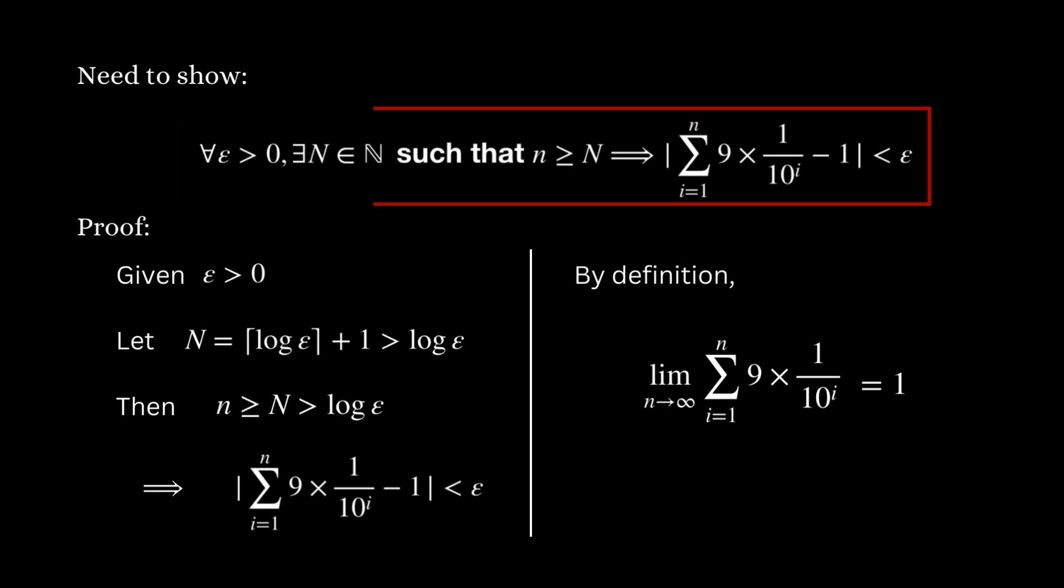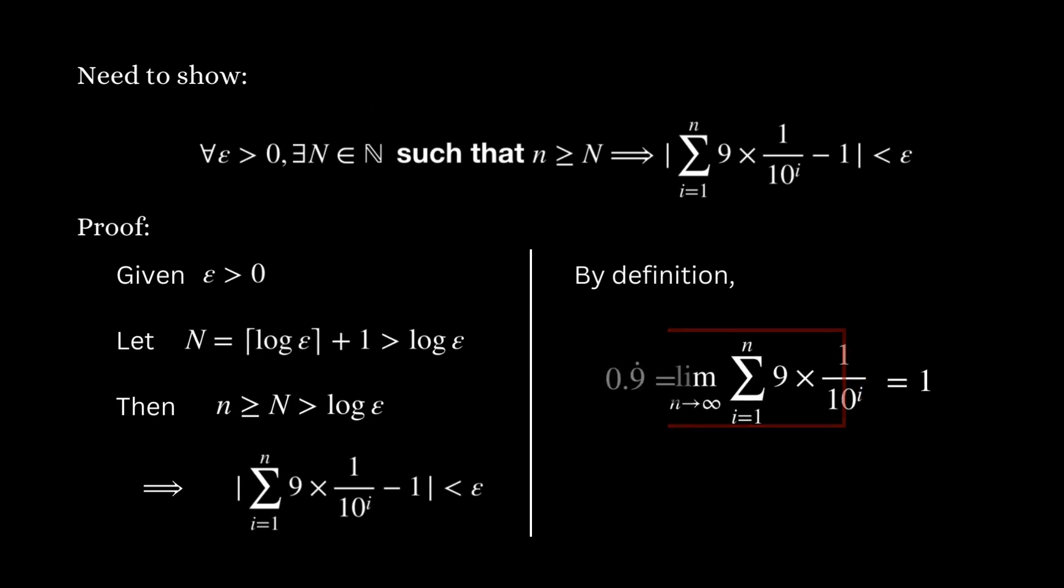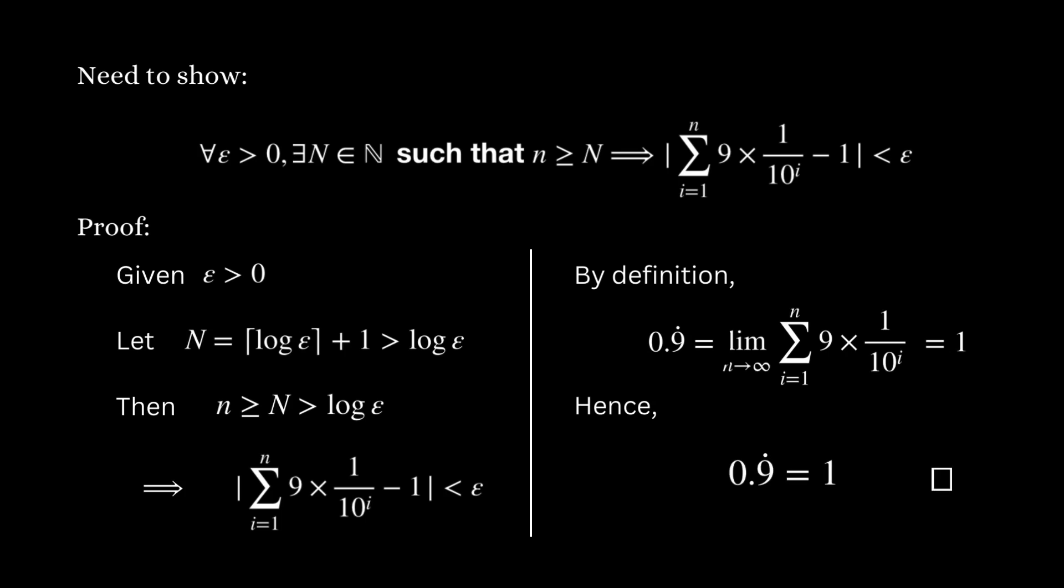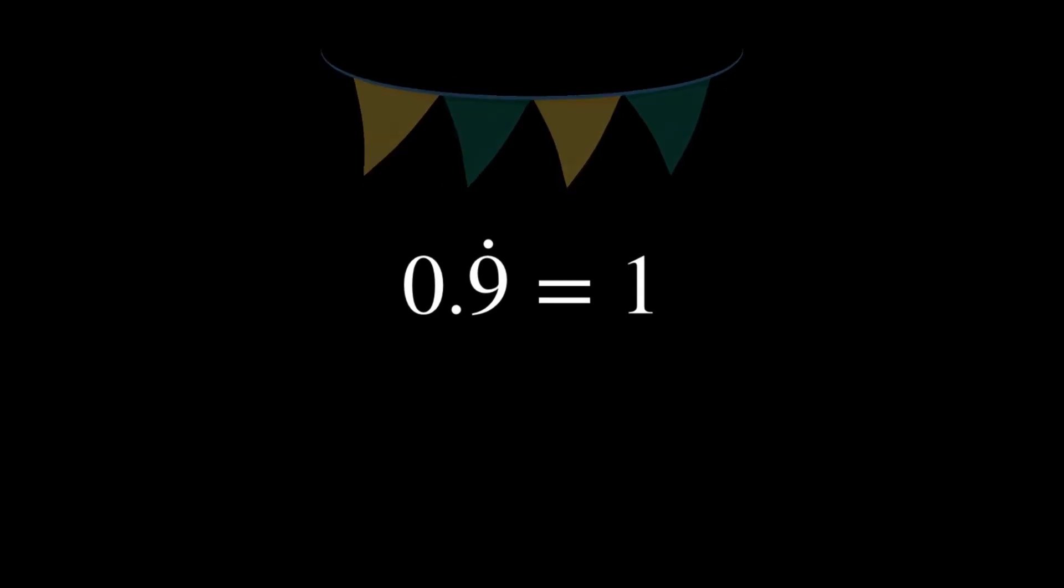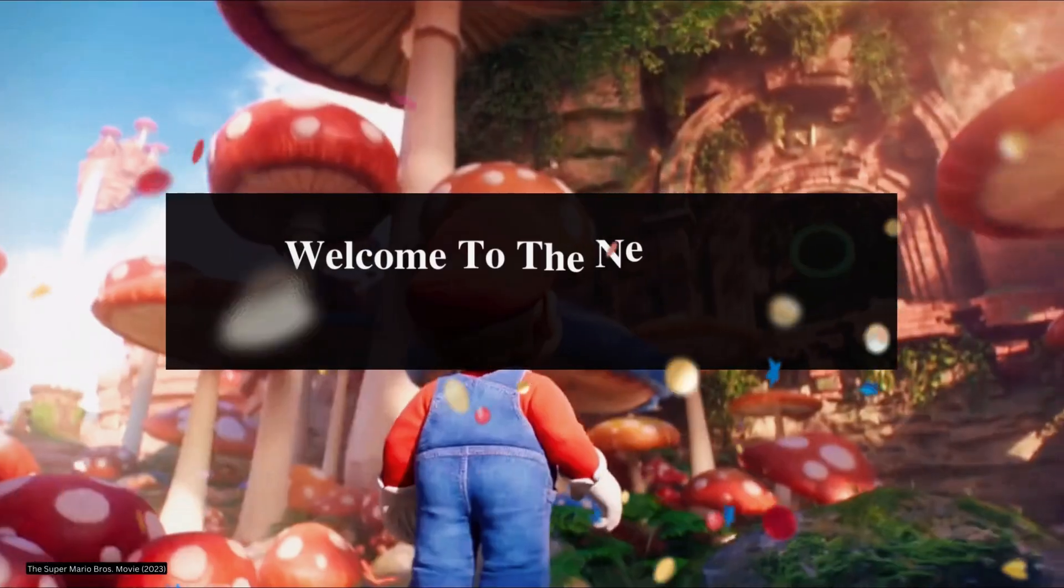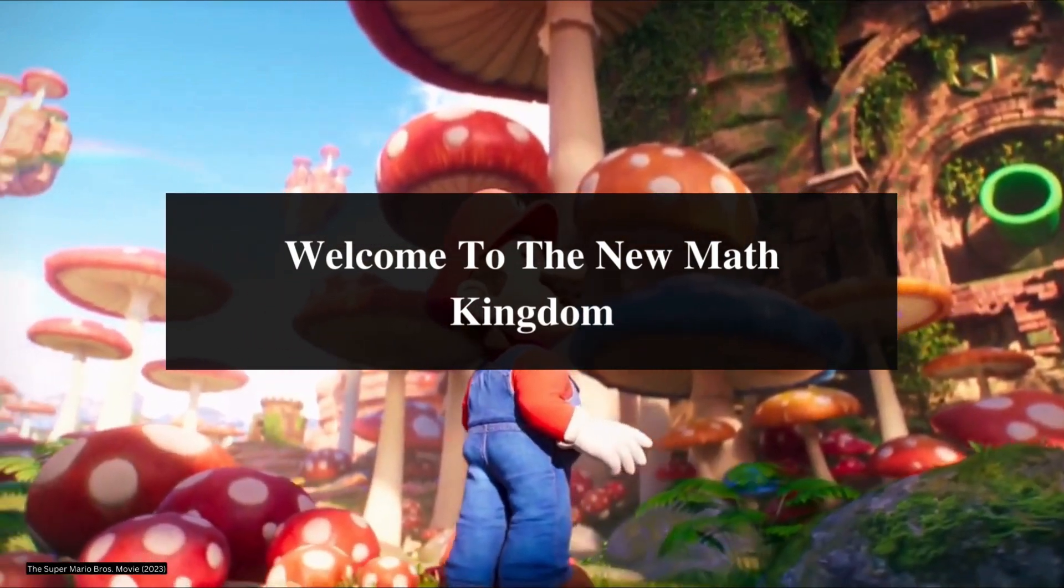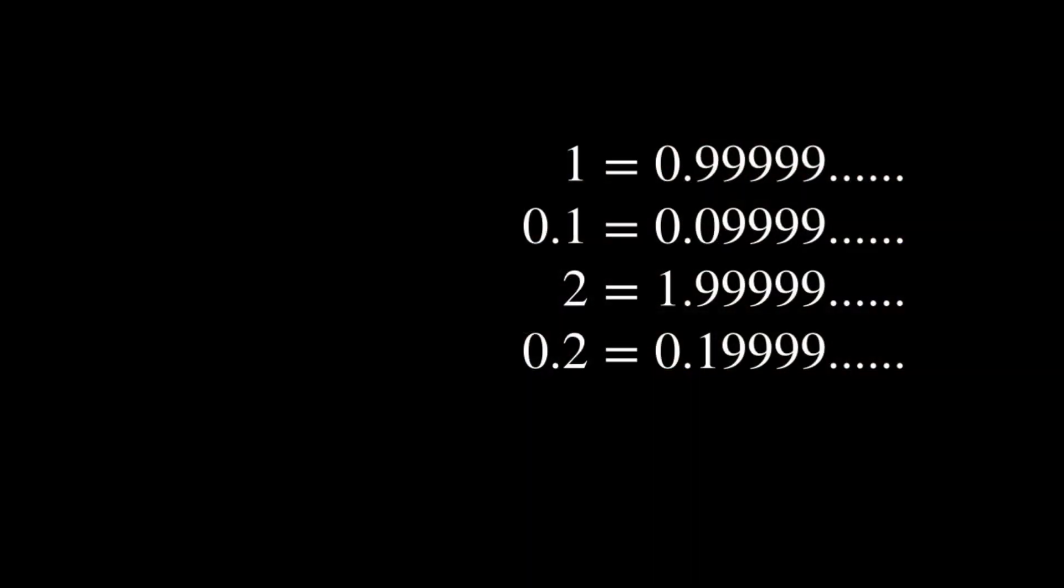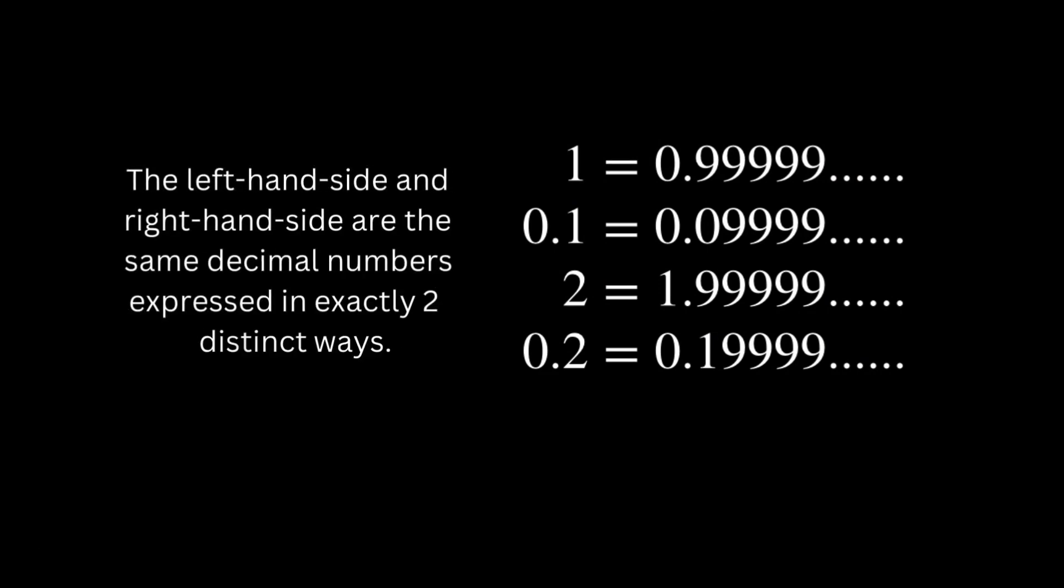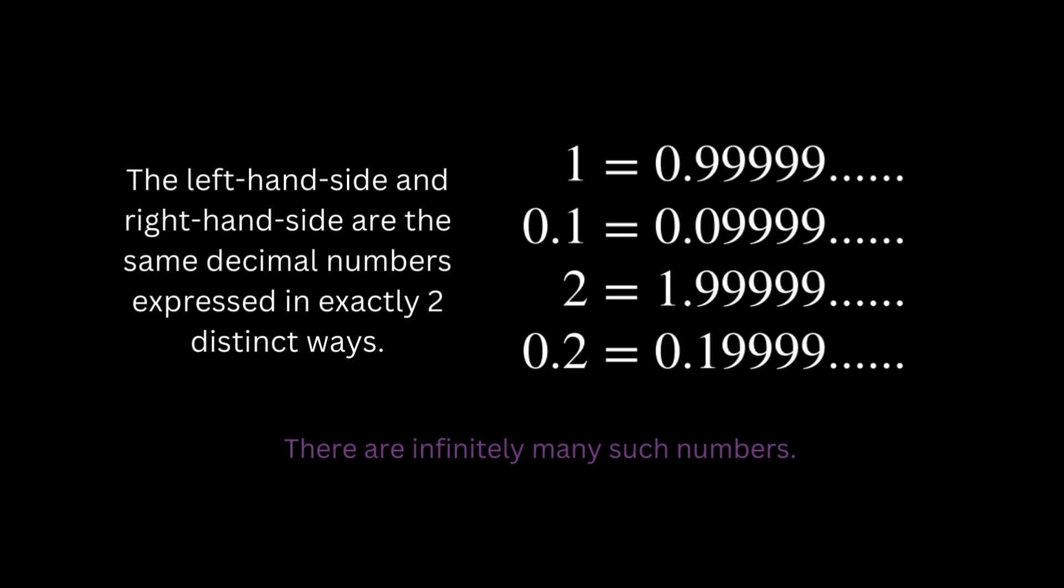Additionally, we know that this limit is exactly 0.9 repeating. Therefore, we have just proved 1 equals 0.9 repeating using only the definition of a limit. Once you grasp that 1 equals 0.9 repeating, congratulations! You have unlocked a fascinating truth that your elementary school teacher likely didn't tell you. There is an infinite number of numbers with two different decimal representations. This means that you can write many numbers in two distinct ways, just like we demonstrated with the number 1.